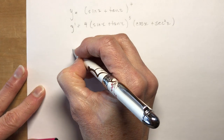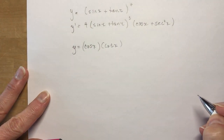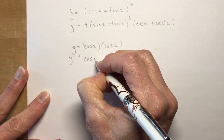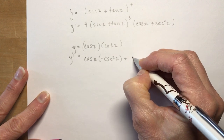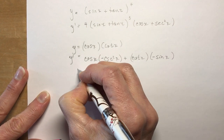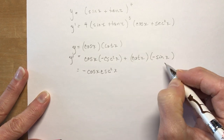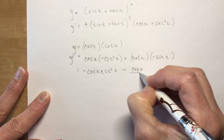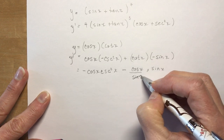Let's try a slightly harder one: y equals cos x times cotangent x. Now we need the product rule. So y prime equals the first times the derivative of the second — the derivative of cotangent x starts with a 'c', so it's negative cosecant squared x — plus cotangent x times the derivative of cos x, which starts with a 'c', so it's negative sin x.